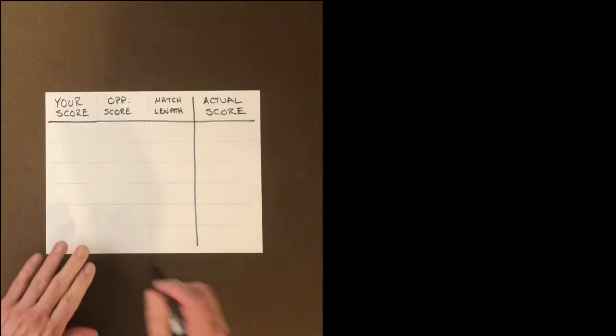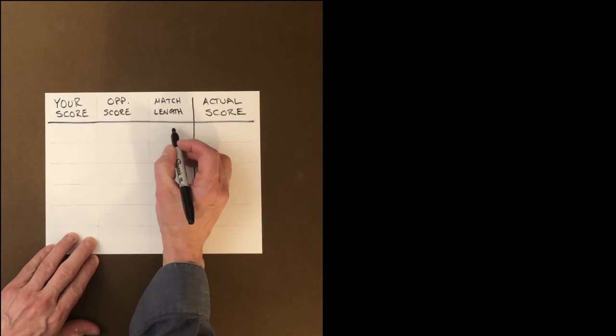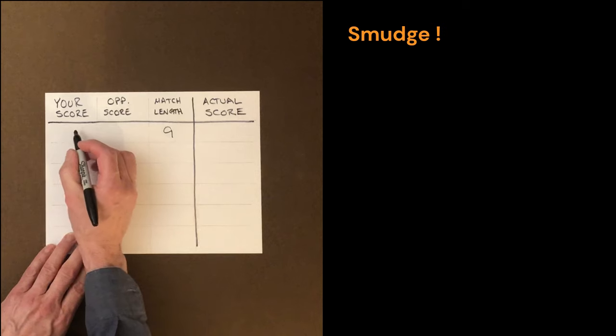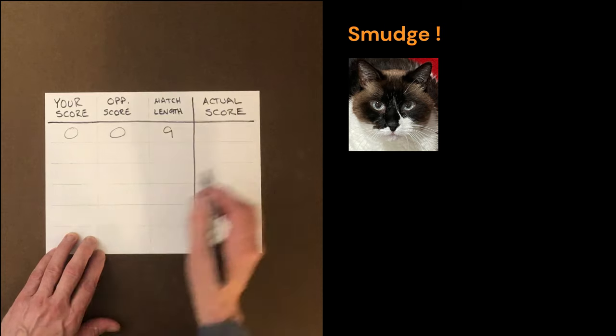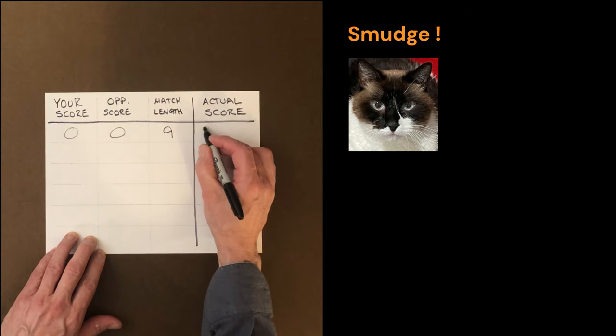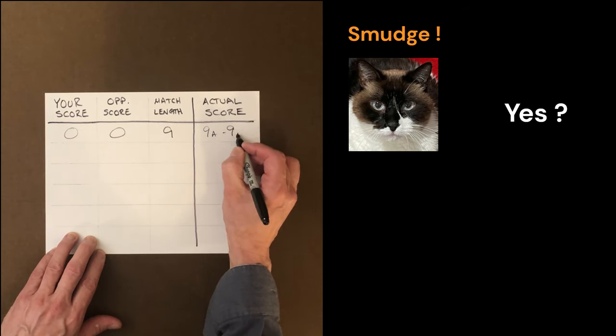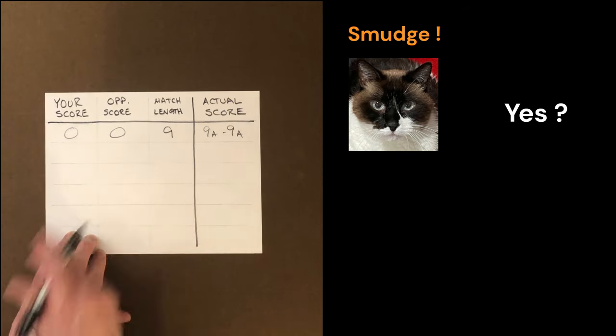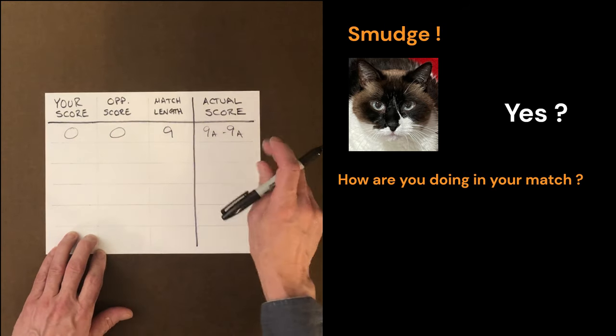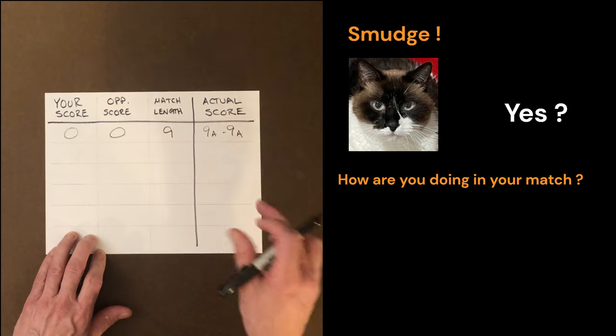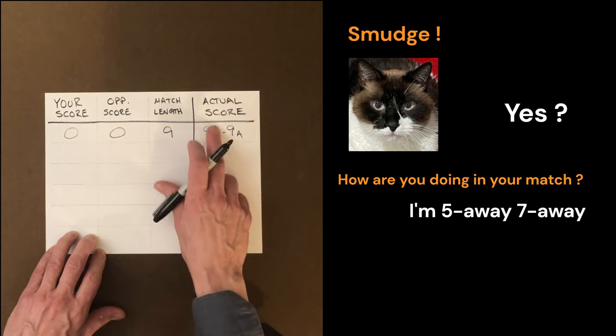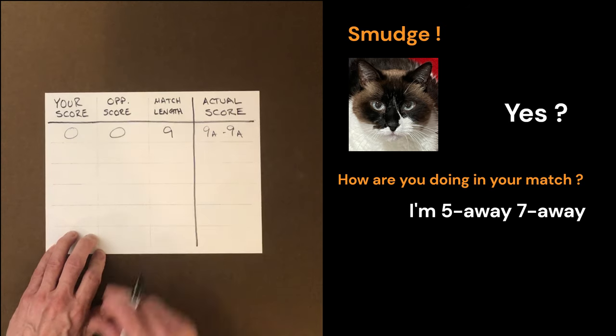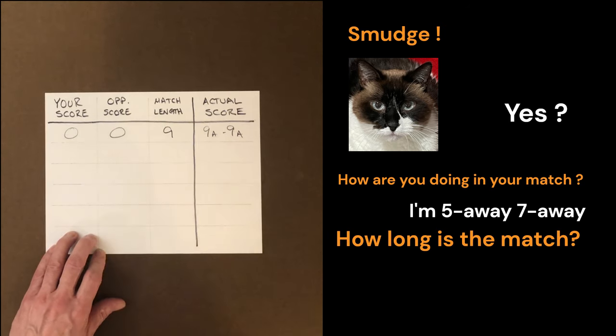Let's say you're playing a 9-point match. Your score is zero, your opponent's score is zero. It's the start of a 9-point match. Your actual score is 9 away 9 away. This is your actual score, but this is the one that we want to use. This is more useful and this is how you want to be thinking about this as you play. And we always talk about our score first, our opponent's score second. We are 9 away 9 away at this match score.